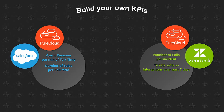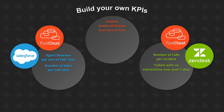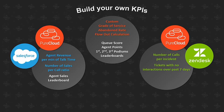Even using just the PureCloud data itself, you can create your own custom KPIs — maybe a custom grade of service, or an abandonment rate where you disregard all abandoned calls before 30 seconds, or your own flow-out calculation. And once you start doing this, you can build a queue score or agent points, configure podium positions for your agents, and create leaderboards on your dashboards, like an agent sales leaderboard or a resolved tickets leaderboard.